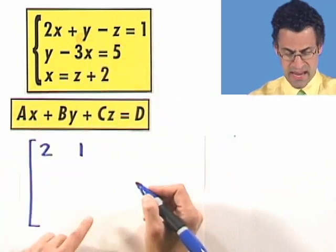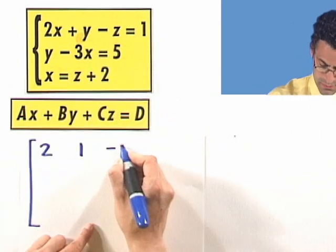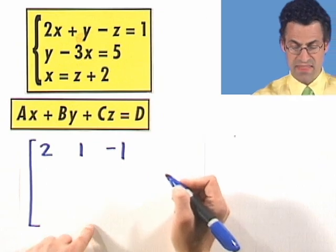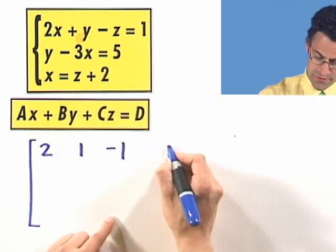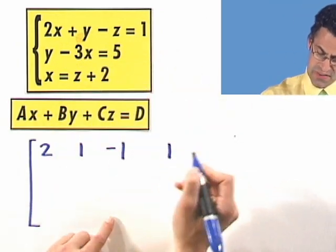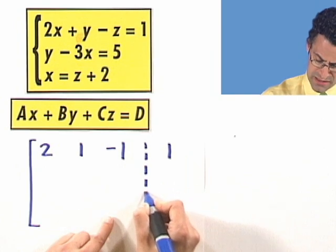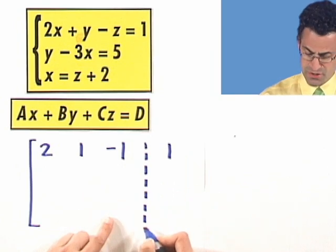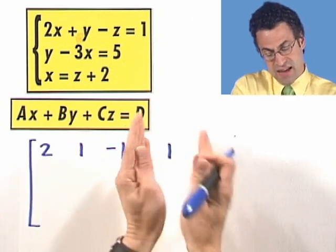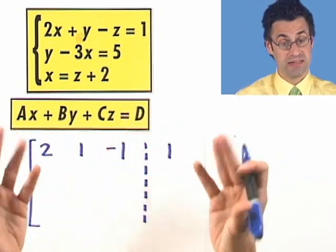And the z is a negative 1. And that equals 1. So I put that here. But since that's on the other side of the equal sign, I augment the matrix this way. That's why it's called an augmented matrix. It's sort of like a matrix and another little teeny matrix here, and they're augmented together.